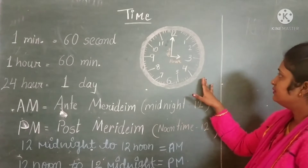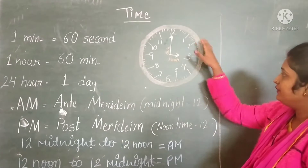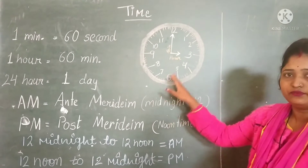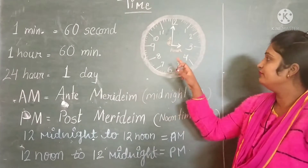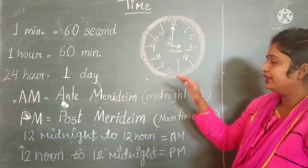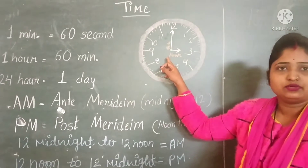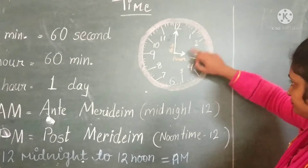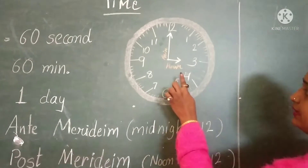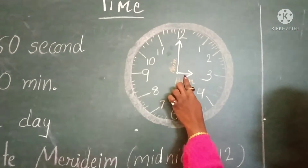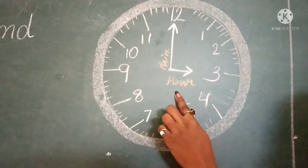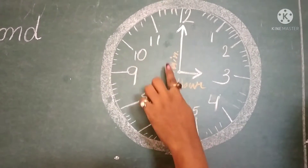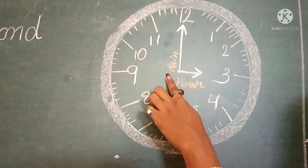It is a watch. We have a 12-hour watch. At our home, we already see this clock. Shorthand always shows hours and longhand always shows minutes.